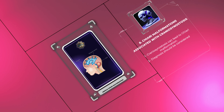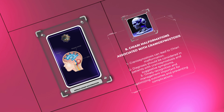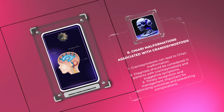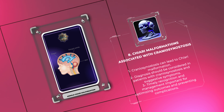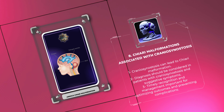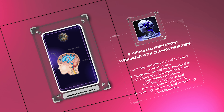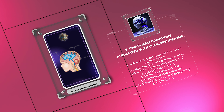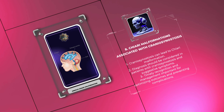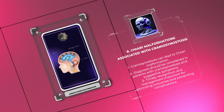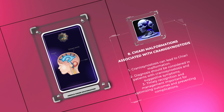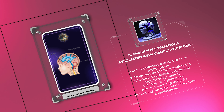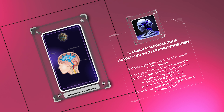Craniosynostosis is a condition characterized by the premature fusion of one or more cranial sutures, leading to abnormal skull growth and shape, potentially causing constriction of the posterior cranial fossa. This constriction can result in Chiari Malformation, which may require surgical intervention to alleviate symptoms and prevent neurological complications. The diagnosis of Chiari Malformation should be considered in patients with craniosynostosis, and timely recognition and management of this comorbidity are crucial for optimizing outcomes.